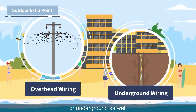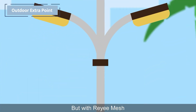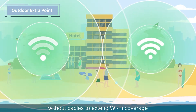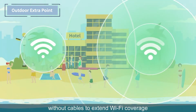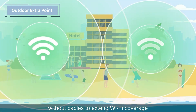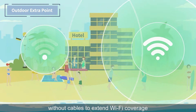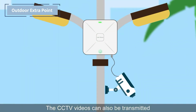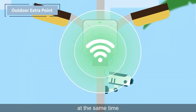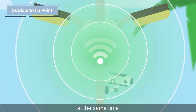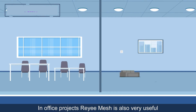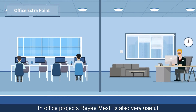For outdoor spaces such as a beach or swimming pool, it is difficult to wire overhead or underground. But with Reyee Mesh, it's easy to add an outdoor AP without cables to extend Wi-Fi coverage. CCTV video can also be transmitted at the same time.